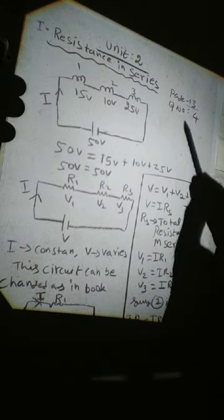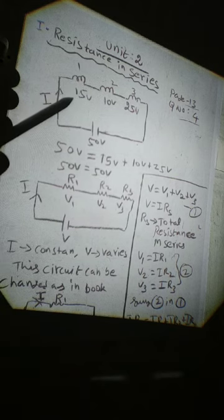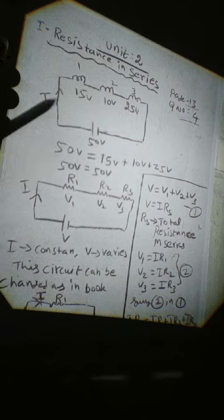First is resistance series. This is Jaraxel page number 13, question number 4. Now look — one battery, a 50 volt battery. It has three bulbs: one, two, three. One bulb is 15 volt, one bulb is 10 volt, one bulb is 25 volt. The voltage is divided: 50 volt equals 15 volt plus 10 volt plus 25 volt. If you add everything, it is 50.